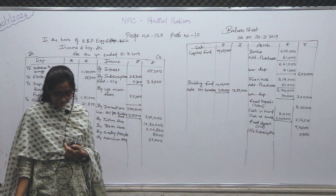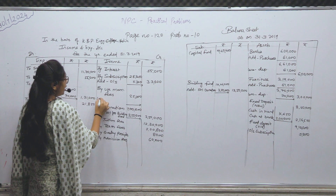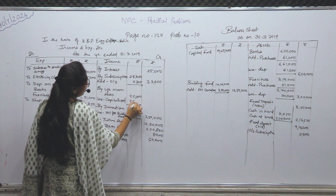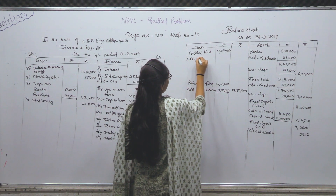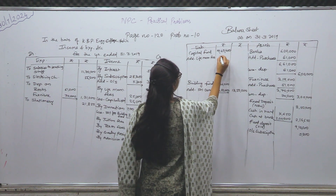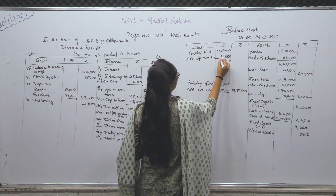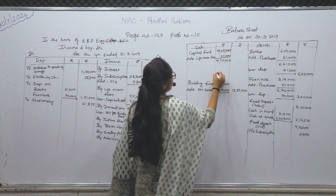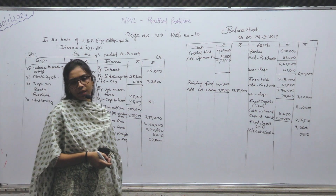आगे — life membership are to be capitalized — life membership किसको देनी है — capital को। Less करके capitalized — कोई percentage नहीं दिये — पूरा का पूरा देना है 25,000। यहाँ nil — capital को add — life membership fees: 25,000 — पूरी add कर देंगे। Capital fund outer में: 9,72,400। सारे adjustment हो गए — सारे amount outer column में हैं।